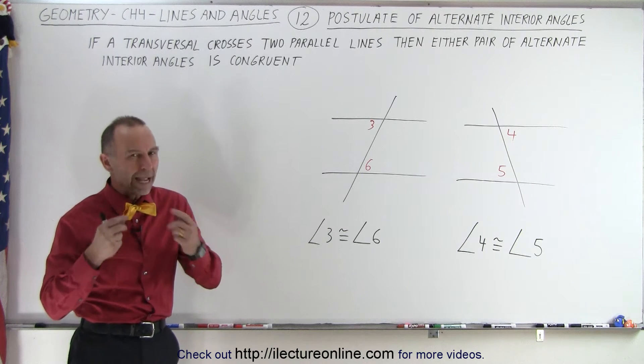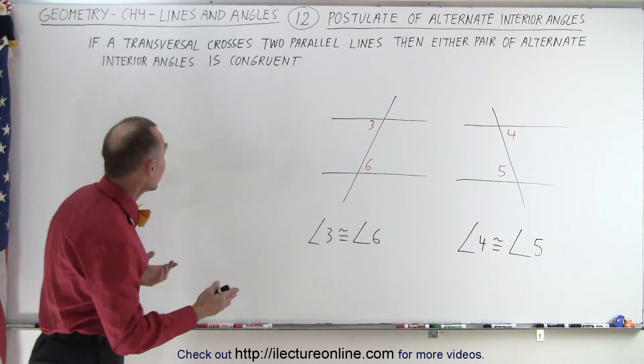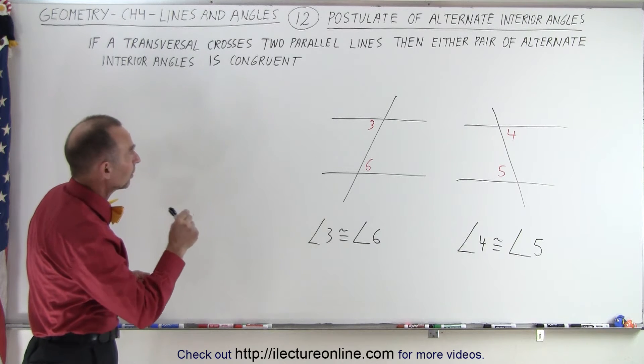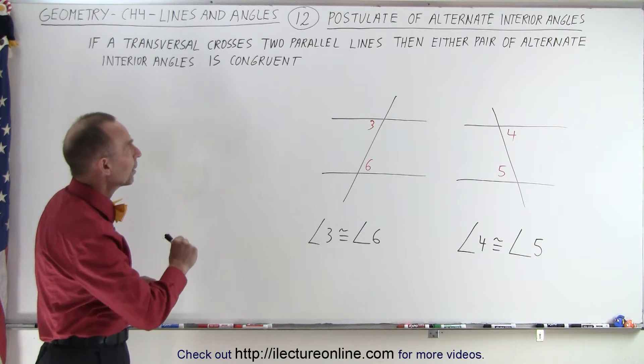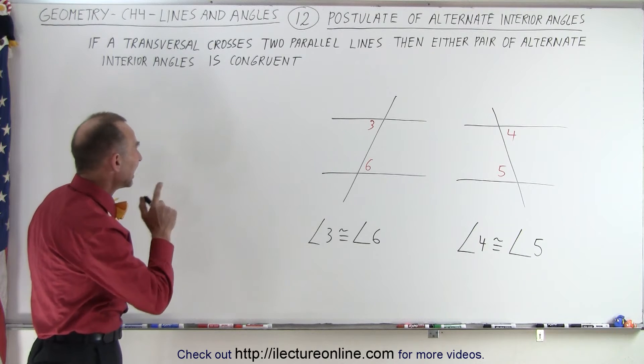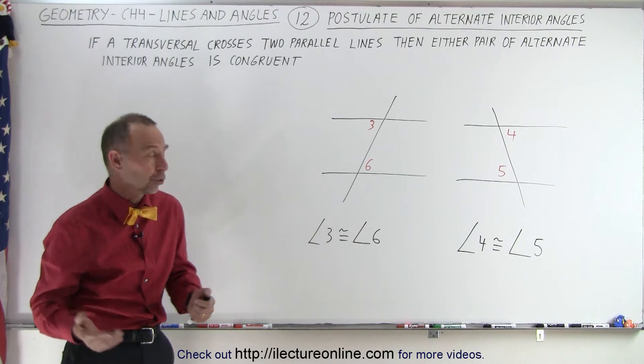And of course there's two pairs of interior angles, so we can say that if a transversal crosses two parallel lines, then either pair of alternate interior angles is congruent. And here are the two pairs.